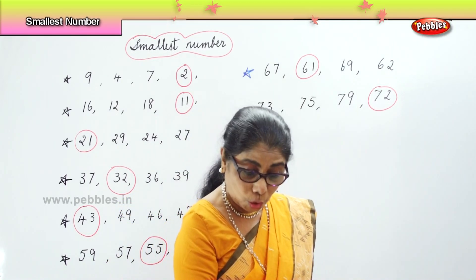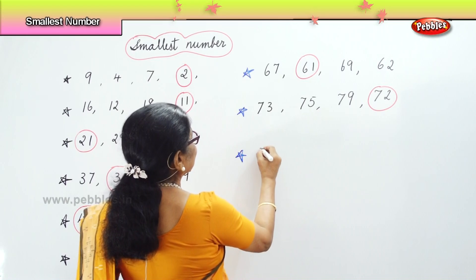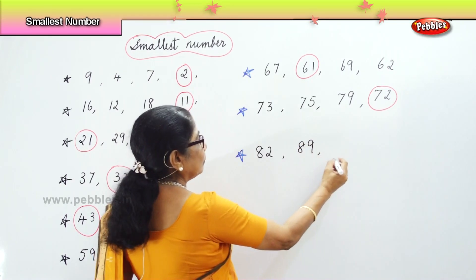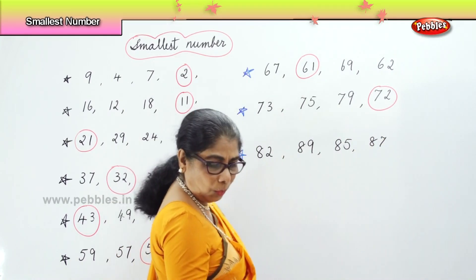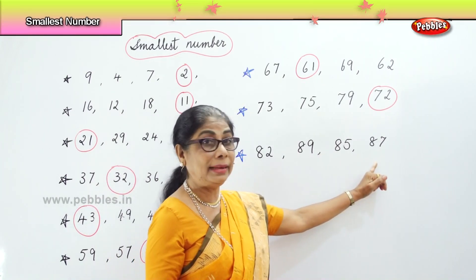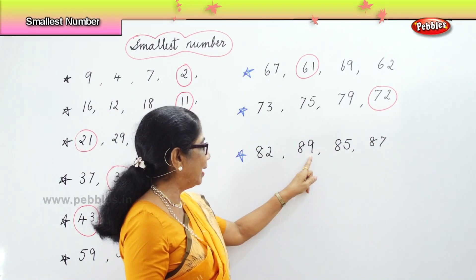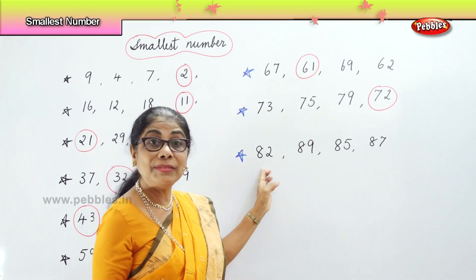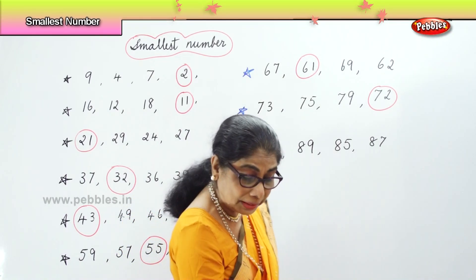Now we'll do another small exercise on 80s. You have here 82, 89, 85, 87. All numbers in 80s. The first numbers are all 8s. Let's look at the second number to identify the smallest: the second number is 2, then 9, then 5, then 7. Among 2, 5, 7, 9 — 2 is the smallest. So, 82 is the smallest among the 4 numbers.